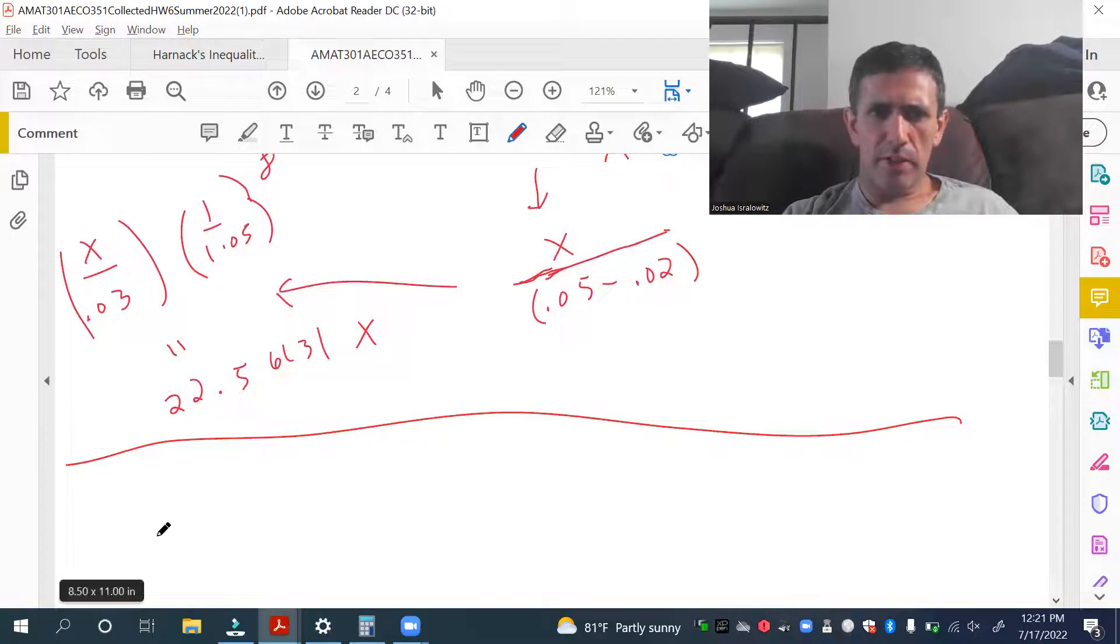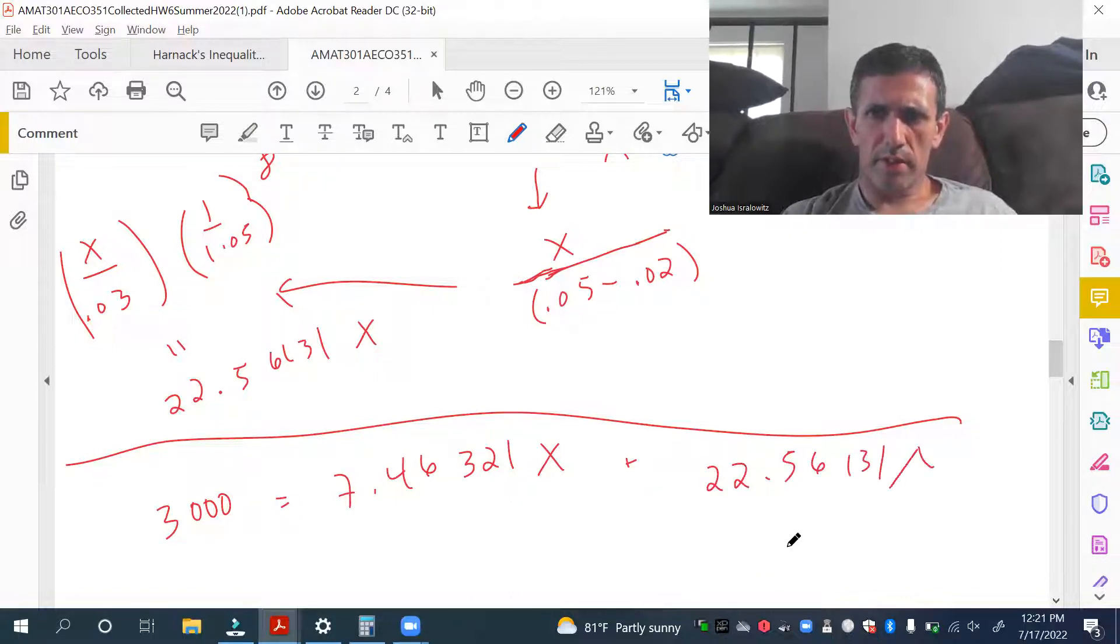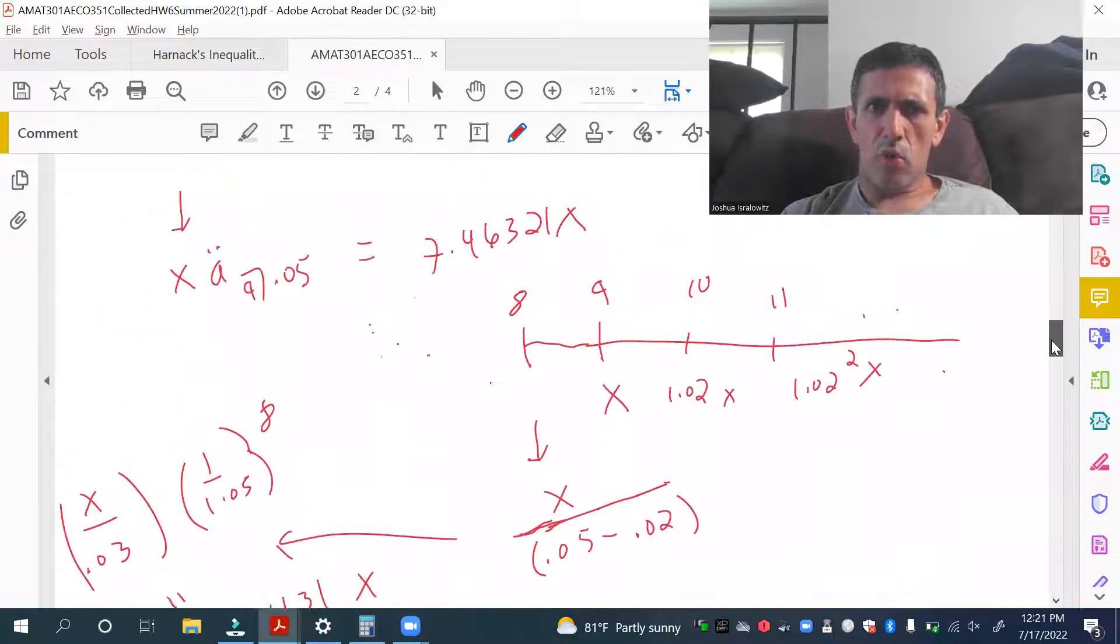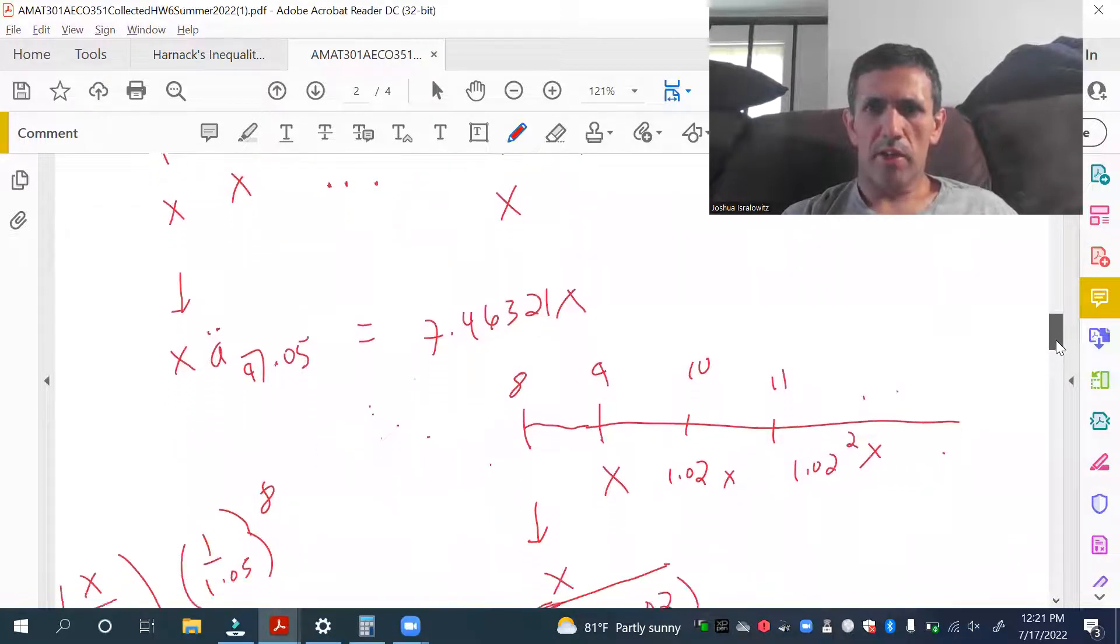Discounted by 8 years at interest rate of 5%. This is 22.56131 times x. All right, so the present value is 3,000. So, 7.46321x plus 22.56131x. So, we get x is 99.92.